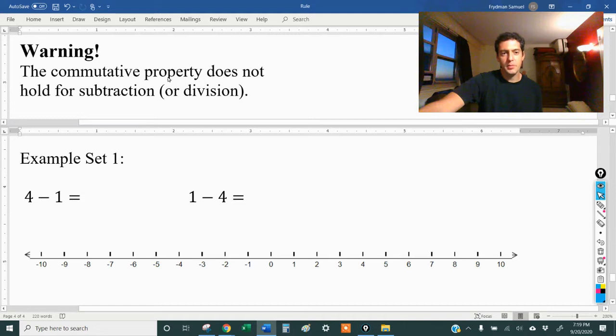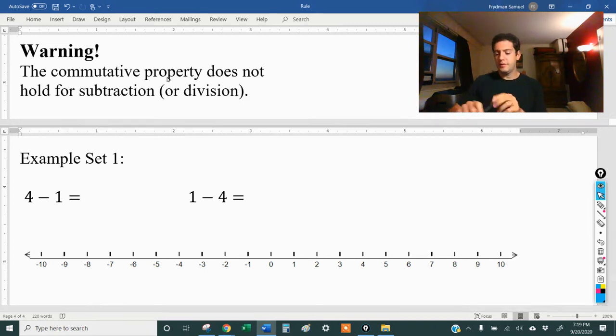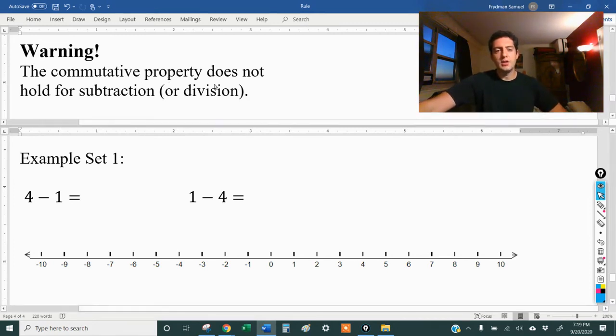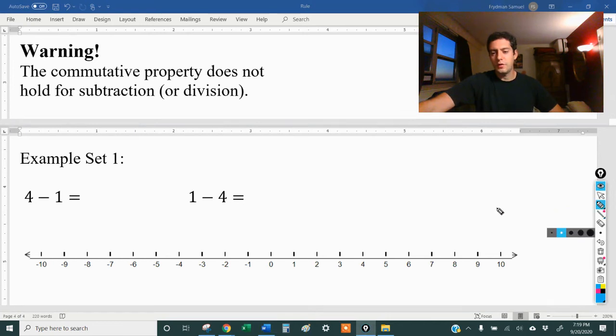So first of all, what is the commutative property? The commutative property says that you can switch the order of numbers and you get the same answer. For example, I'll just write a couple extra problems here. What is five plus three? That's eight, right?